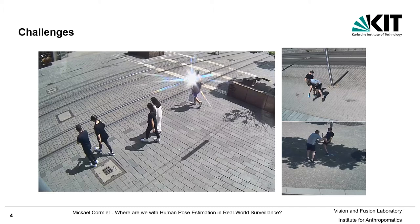We also have really challenging conditions with shadows, which can be detected as a person. Some reflections from a smartphone shine directly into the camera. We have persons who are fighting, really near to each other and difficult to separate. And within the scene, we also have strong variation in illumination.